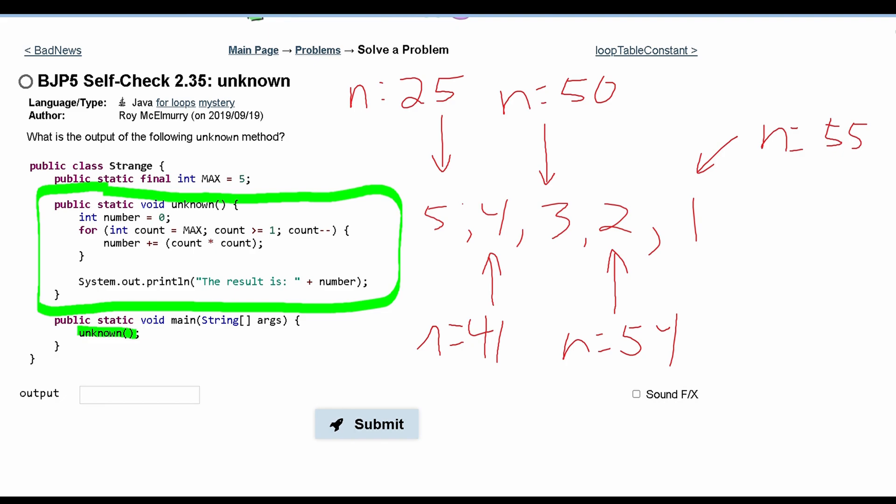This means that our output is just going to be this System.out.println right here, where it says the result is, and then number. So basically, in our output, we will have the result is, and then 55. So this will be our answer that will go in here.